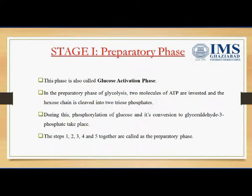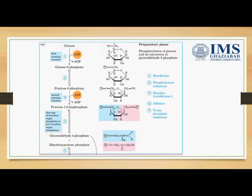The Preparative phase is also known as the Glucose Activation phase. In this phase, two ATP molecules are utilized for the activation of glucose, and this phase comprises the first five steps of the glycolytic pathway.